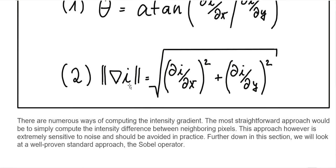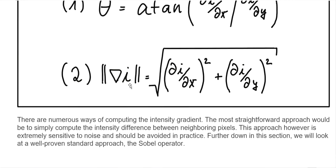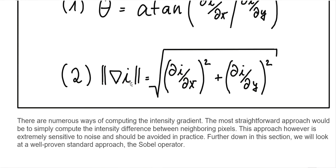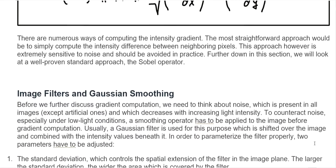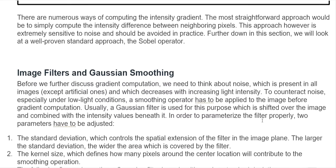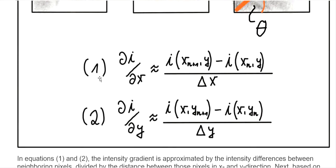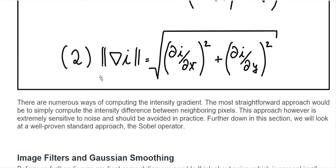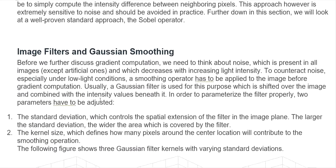When we calculate the gradient, one important issue is the impact of noise. The most straightforward approach would be to simply compute the intensity difference between neighboring pixels. This approach, however, is extremely sensitive to noise. To avoid noise in the image, before we calculate the change of intensity — the gradient — we have to apply an image filter and Gaussian smoothing.